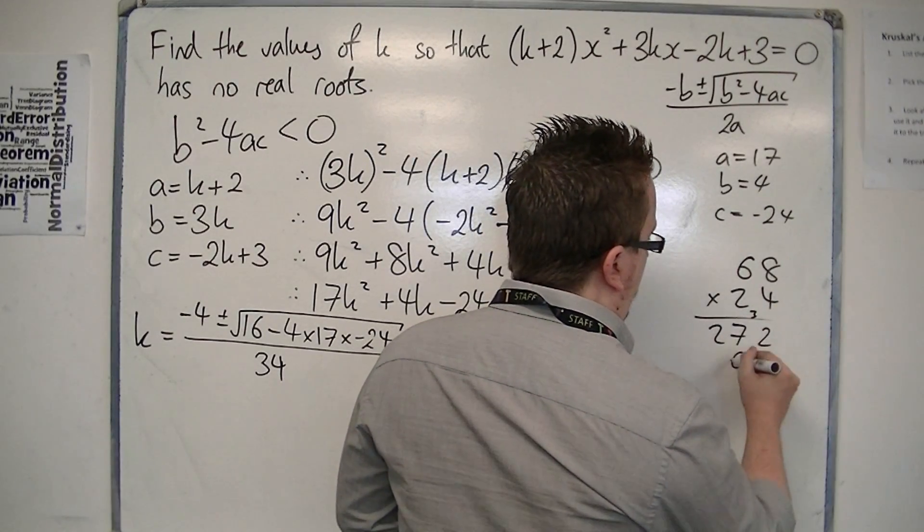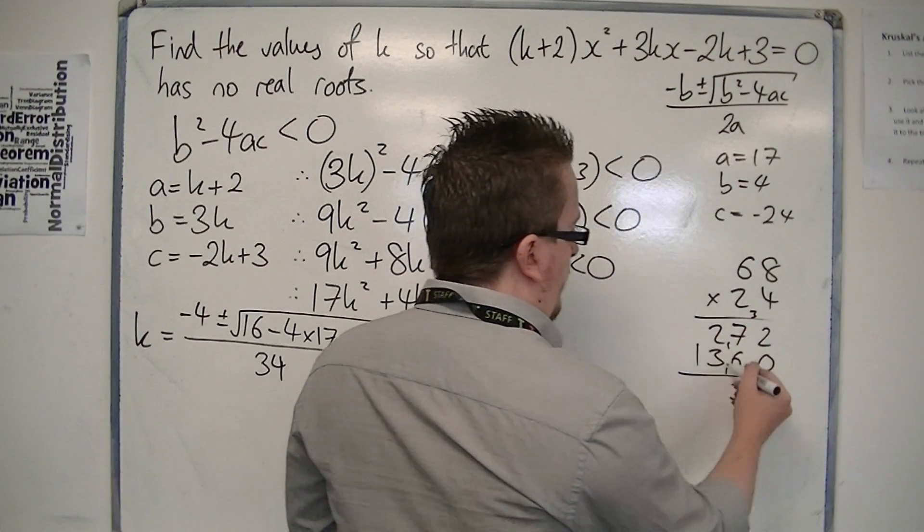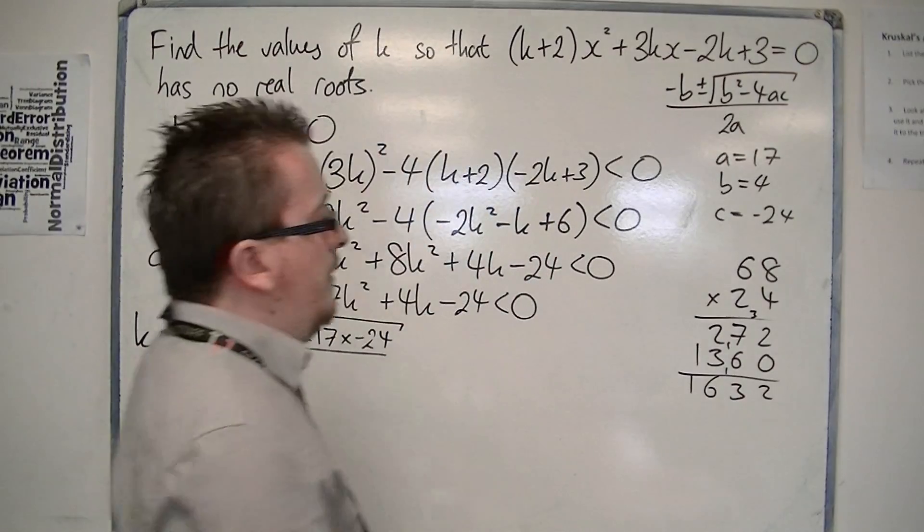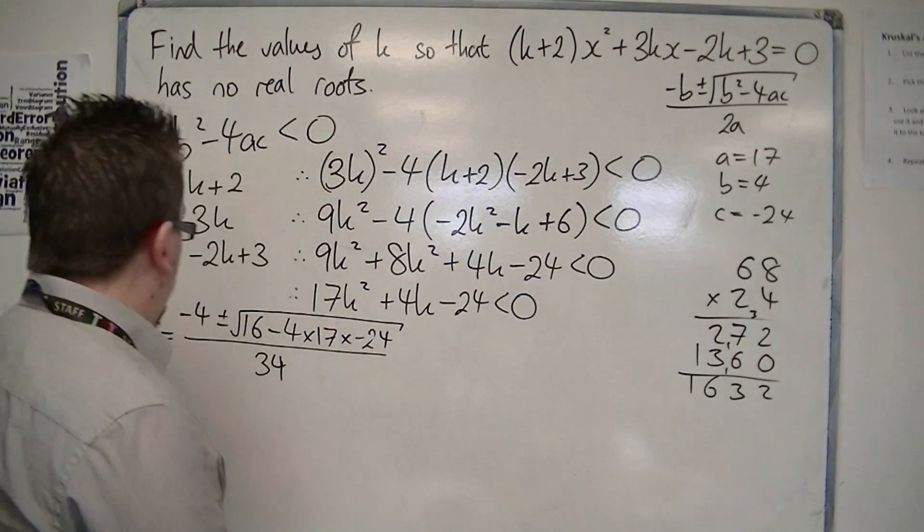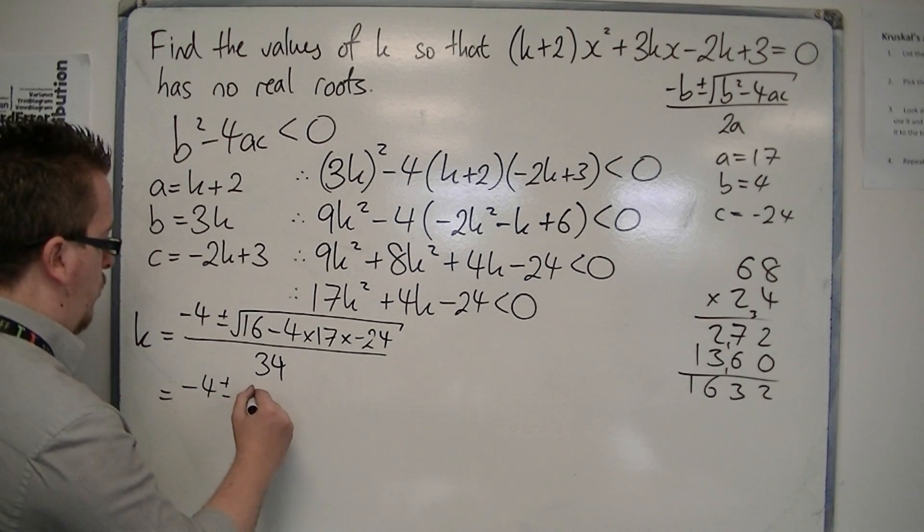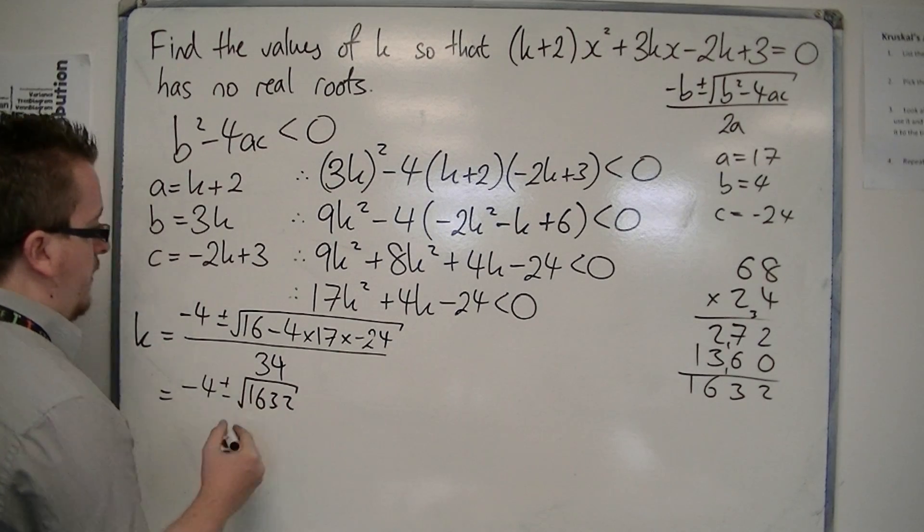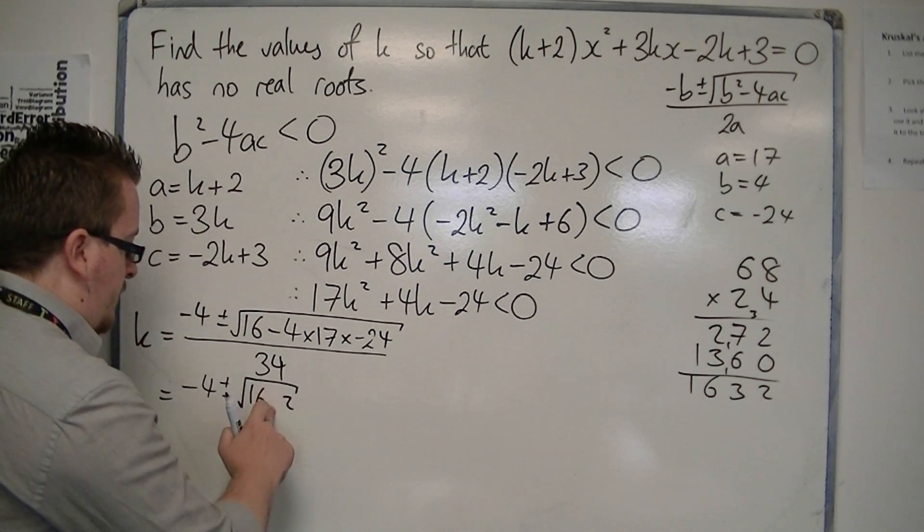2, 8 is 16, 2, 6 is the 12, 13, so 2, 13, 5, 6, 1. So 1632. So we've got -4 plus or minus 1632 square rooted. Sorry, I haven't added that to the 16, so we're going to need to add that to 16, so that's 1648.